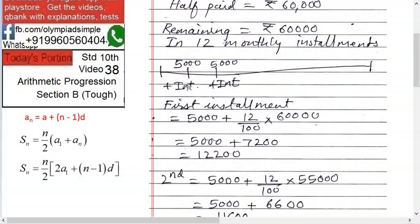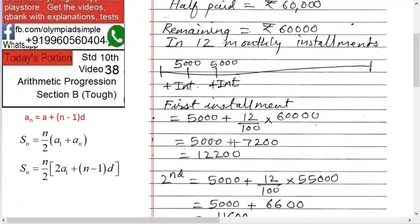What will be the first installment? It is 5,000 from the principal plus interest. In the first installment, 12 installments are pending, so interest is on the full 60,000: 12 upon 100 into 60,000 = 7,200. So the first installment is 5,000 plus 7,200 = 12,200.